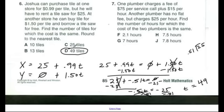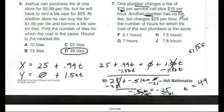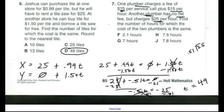You can do number 7 on your own. Set up your equation for each company: one plumber charges an initial fee — your constant — and adds $15 per hour, which is your variable part. The other plumber charges no fee but charges more per hour. Set them equal and solve for hours, and then determine which is the better buy depending on how many hours you expect to need the plumber.